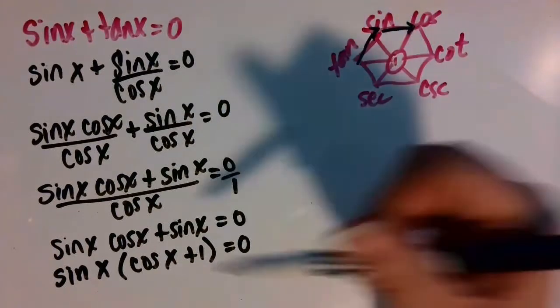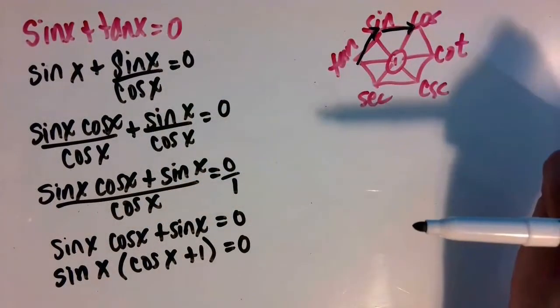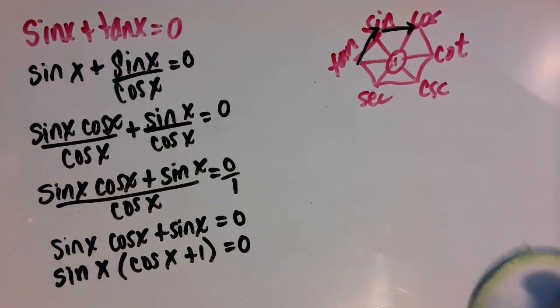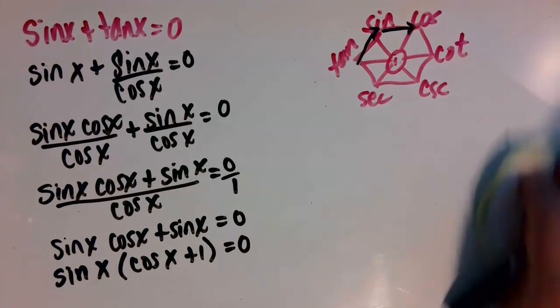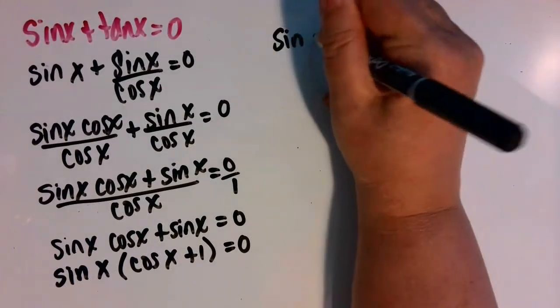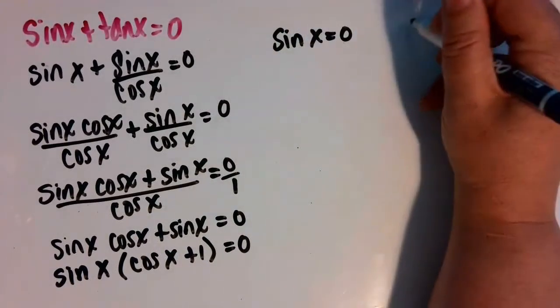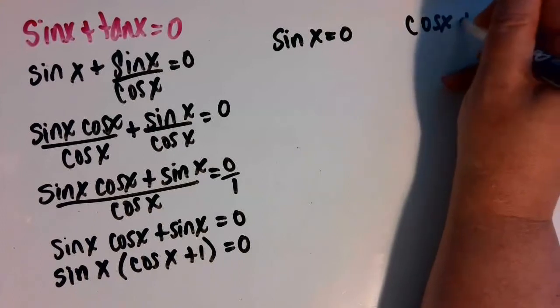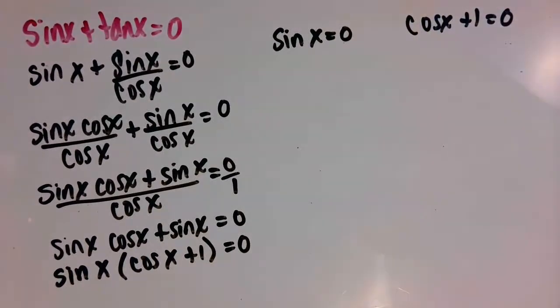And then using the zero product property, I can set each of those factors equal to zero and solve for x. So sine of x equals zero, or cosine of x plus one is equal to zero.